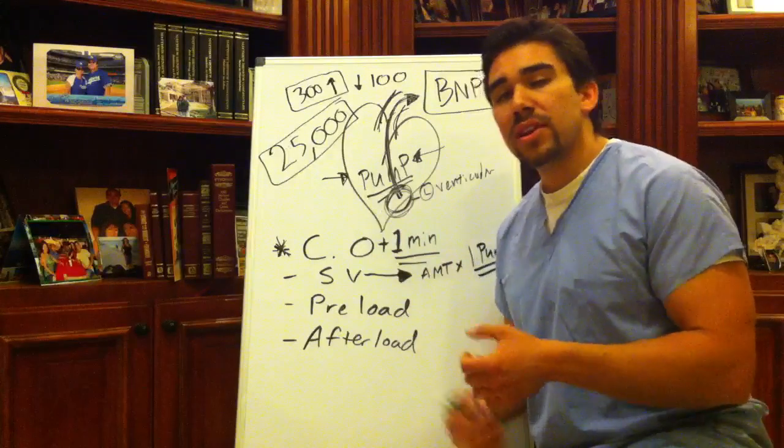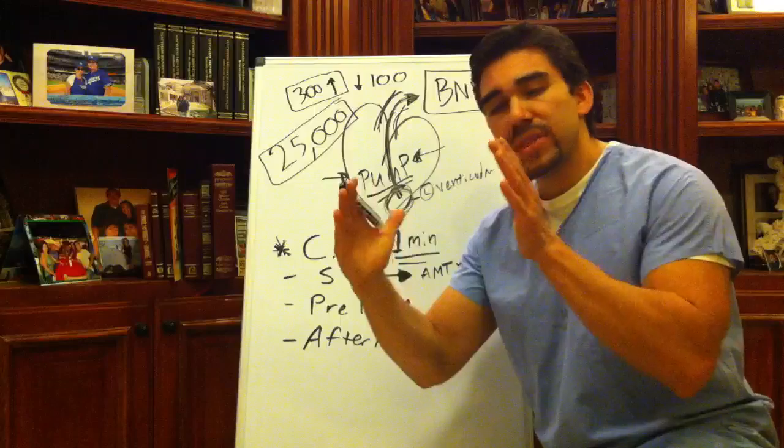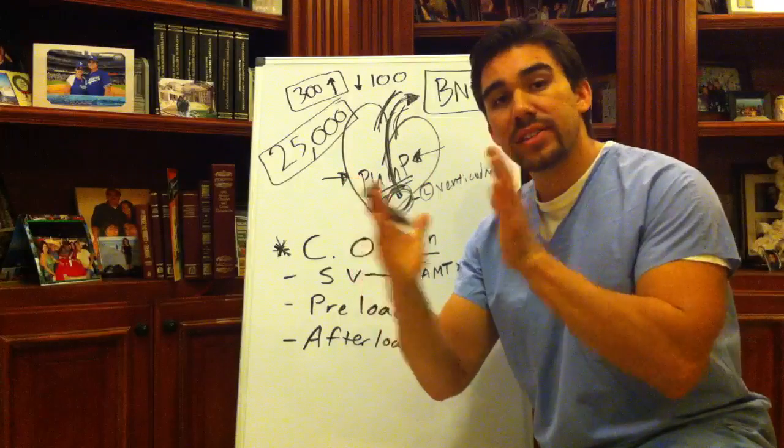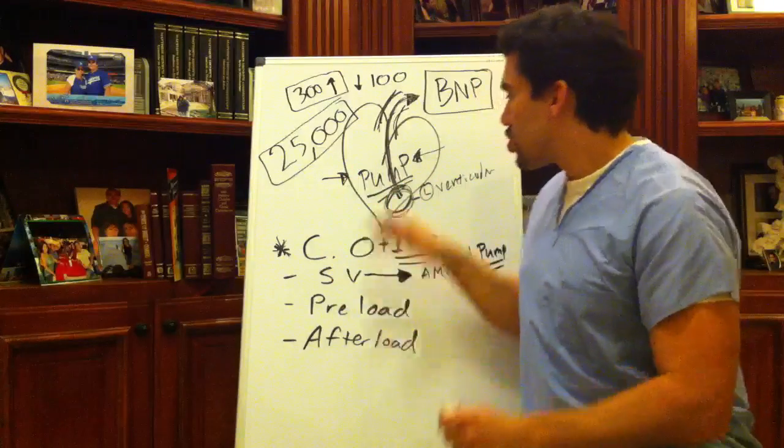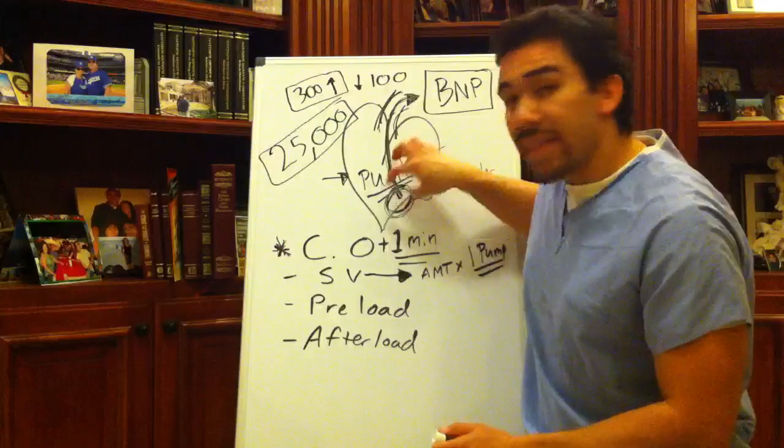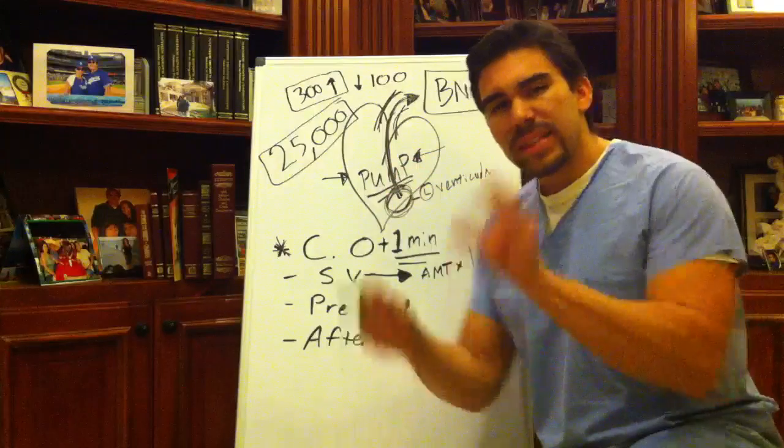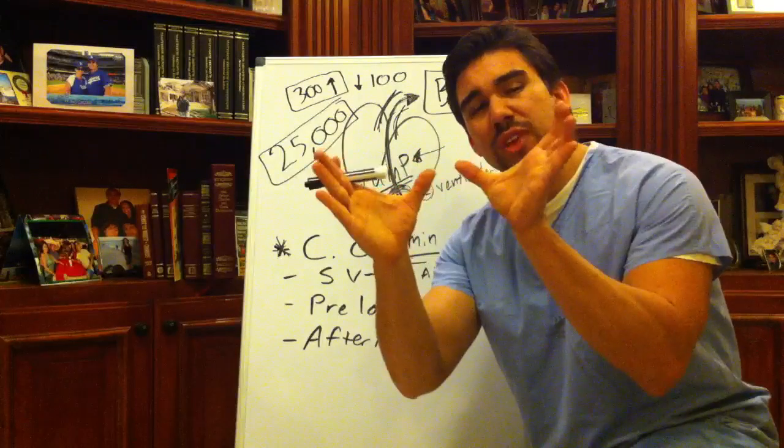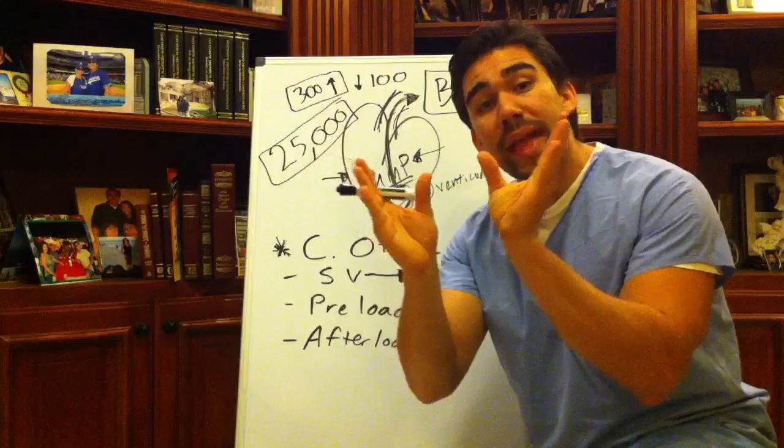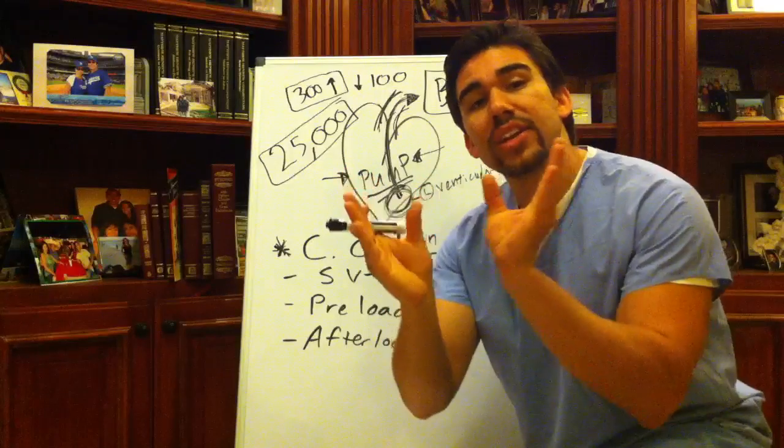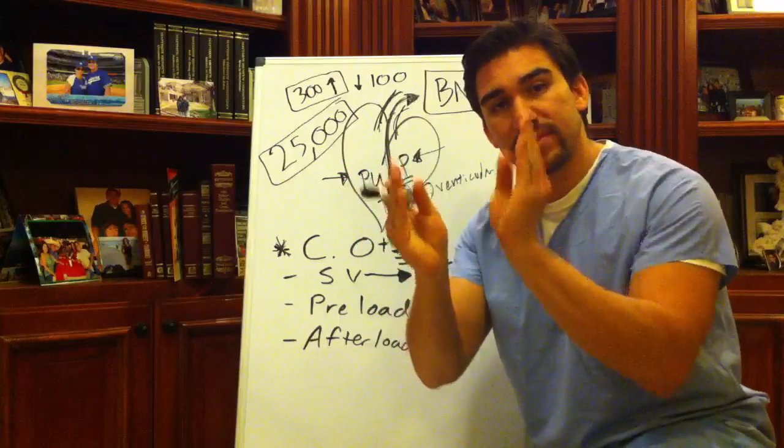Because after you do your nitro, you're trying to expand those highways of the heart to vasodilate, trying to relax that left ventricle. Because if that left ventricle is stretching, we want it to relax just a little bit to get a good, clean squeeze for us. Does that make sense?